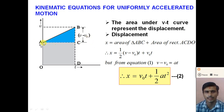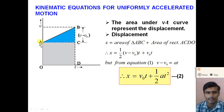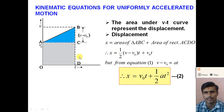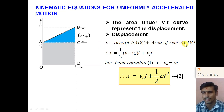For this graph, if the object travels with initial velocity v₀ and constant acceleration a, we calculate the area covered by the velocity-time graph on the time axis. We need to find the shaded area. To calculate it, we find the area of triangle ABC plus the area of rectangle ACDO. The total area gives the displacement of the object.